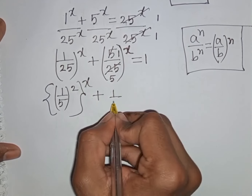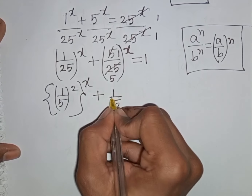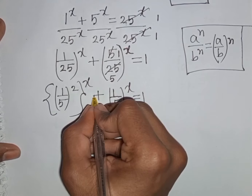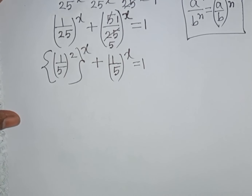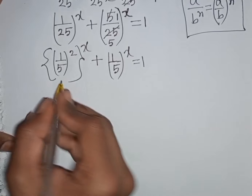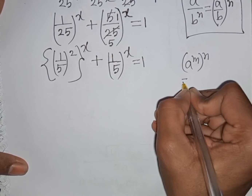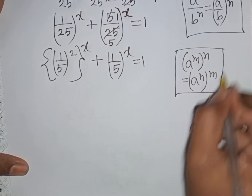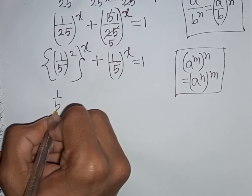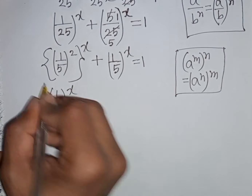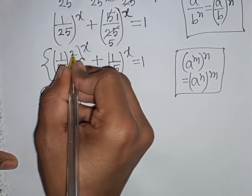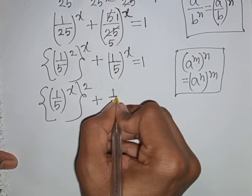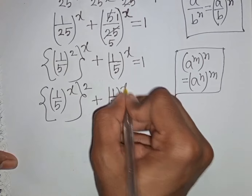So we have (1/5)^x is equal to 1. We can apply the rule a^(m·n) = (a^m)^n. According to this rule we can write (1/5)^(2x) plus (1/5)^x is equal to 1.